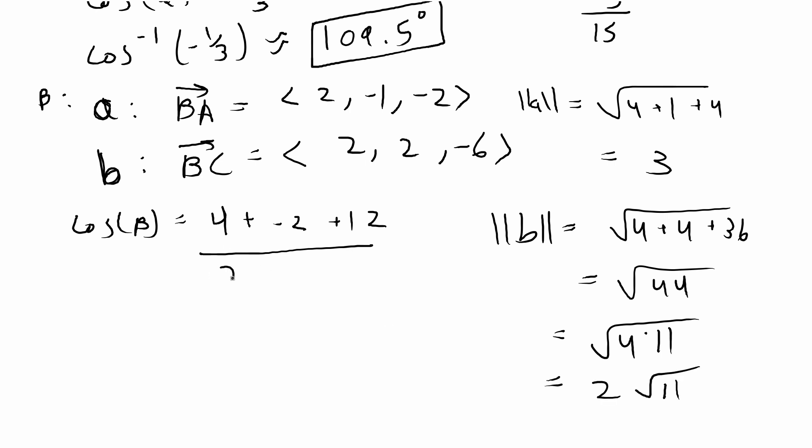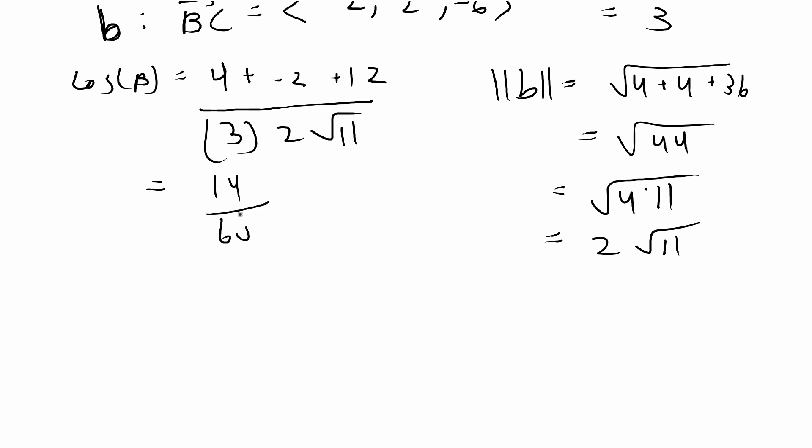So the denominator here is 3 times 2 times the square root of 11. This is equal to 14 over 6 times the square root of 11. And if you want to simplify that further, it would be 7 over 3 times the square root of 11. If we do the inverse cosine of 7 over 3 times the square root of 11, that will approximately be equal to 45.3 degrees. And that gives us our second angle.